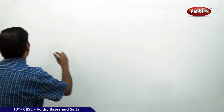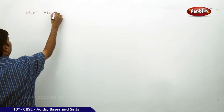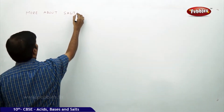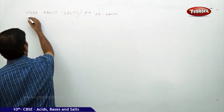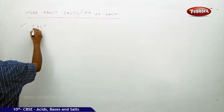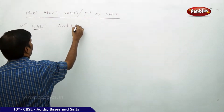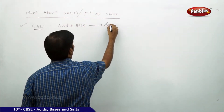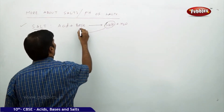The next part under discussion in this chapter — acids, bases and salts — is more about salts and the pH of salts. A salt is always formed when an acid reacts with a base, giving salt plus water.